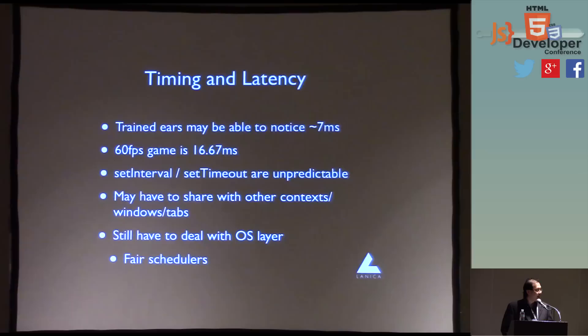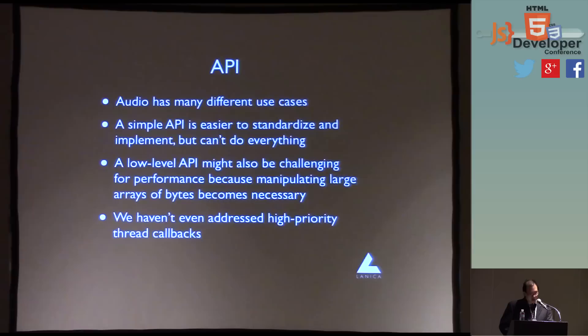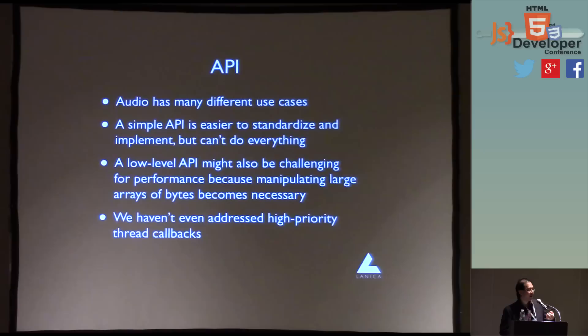In the web browser, you may have multiple tabs, multiple windows, and you still have to deal with the OS kernel scheduler. Linux is a fair-scheduling-based OS. I think Apple cheats and says audio actually gets a high-priority thread to make sure those things are delivered. Linux says no, you have to play fair — and that makes life more difficult for an audio developer. On the HTML5 API side: one criticism is the API is just too high level and doesn't do enough. But a simple API is easy to standardize and implement — whereas a low-level API has performance problems because now you're starting to manipulate arrays of bytes for your own mixing, and JavaScript arrays of bytes is not what the language is optimized for. Audio also deals with background threads, and scripting languages in general are not very good with threads.